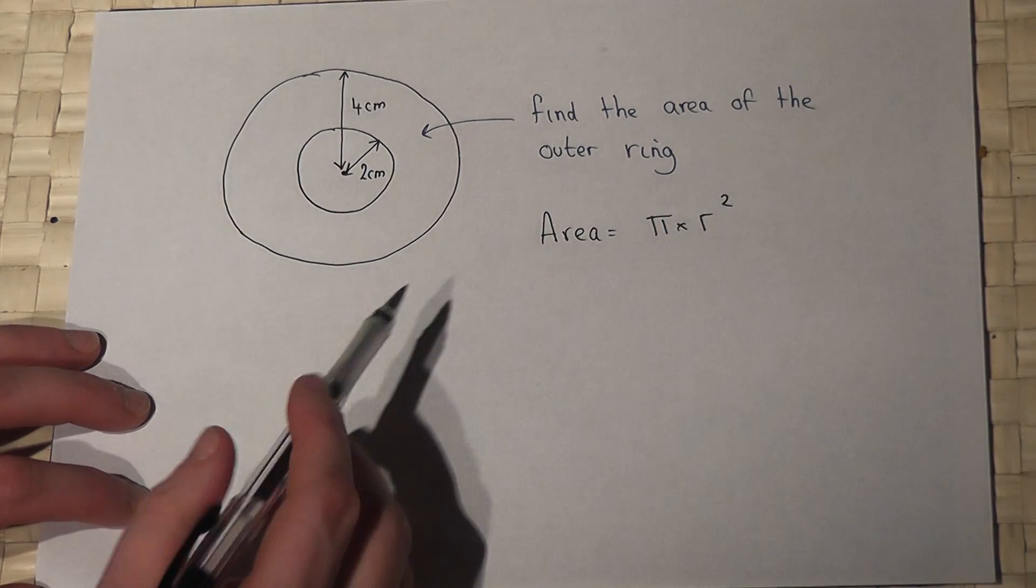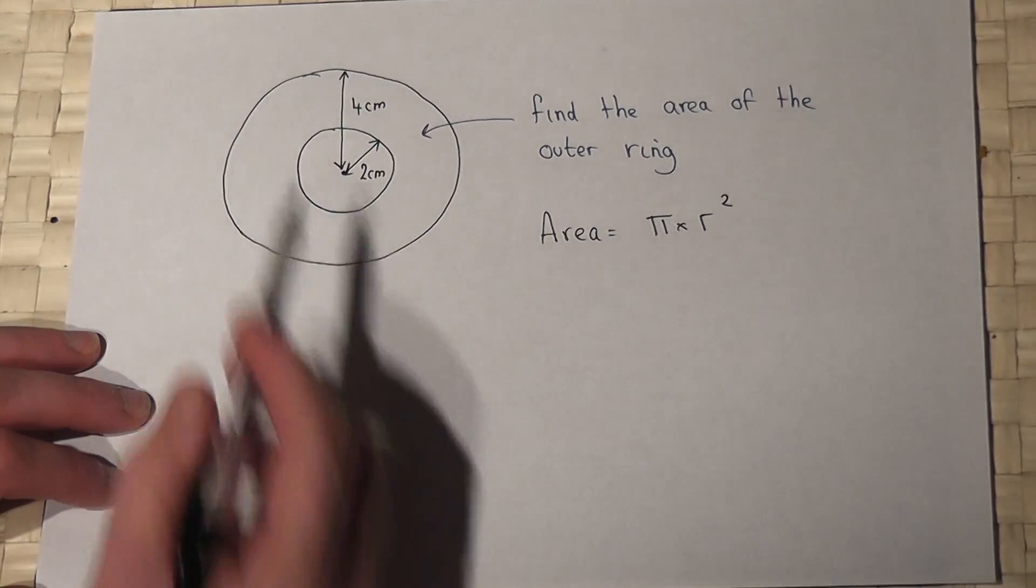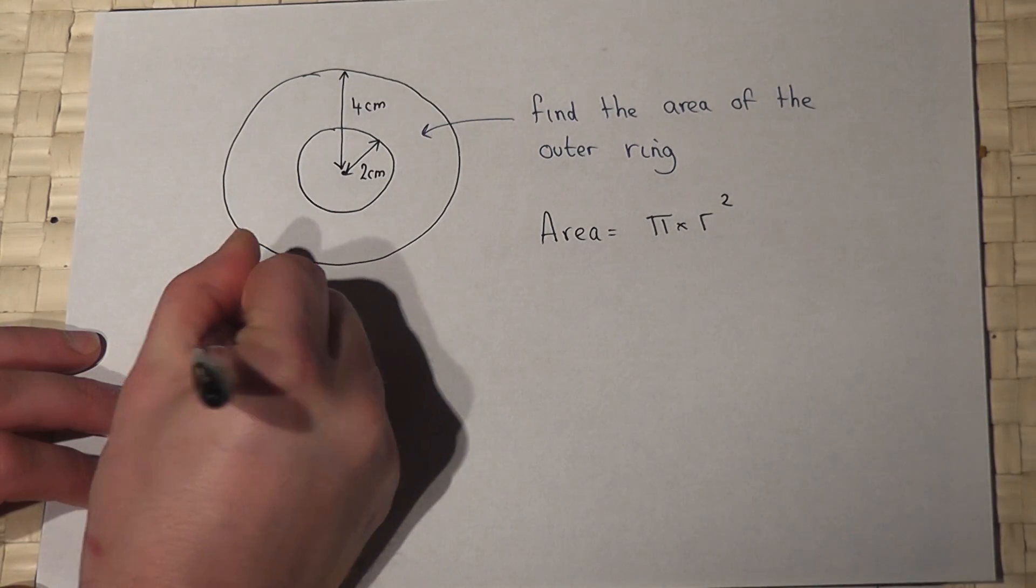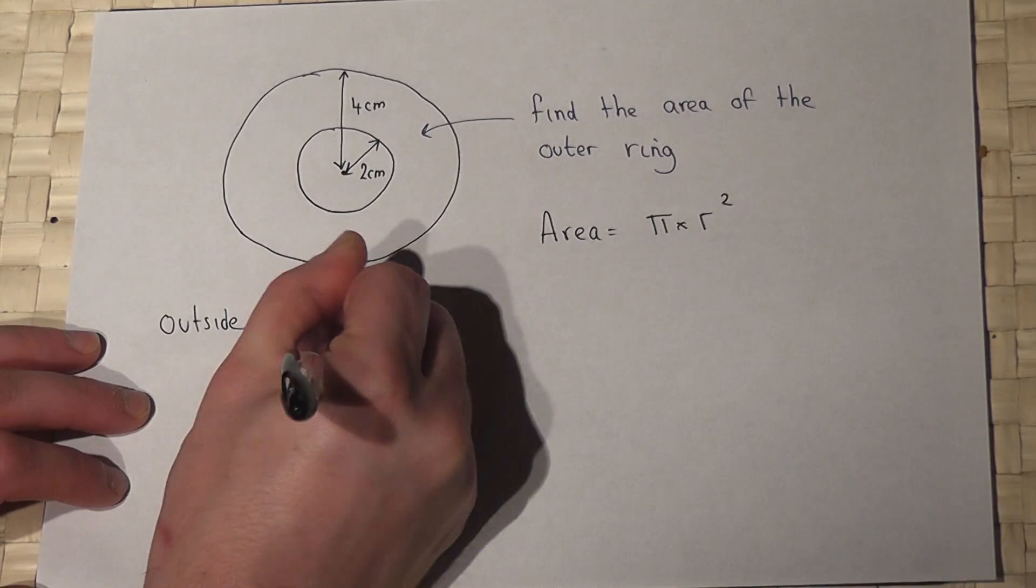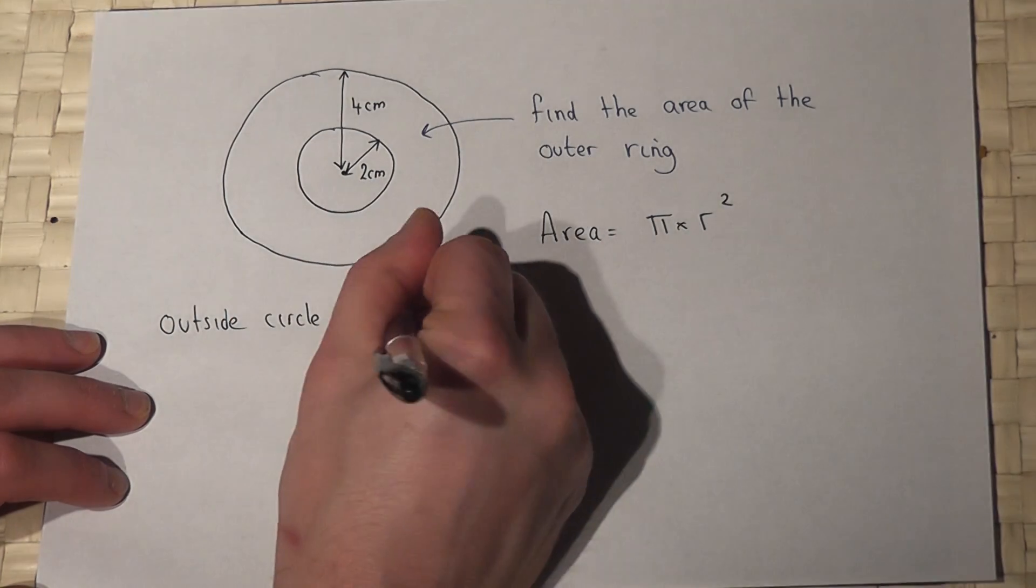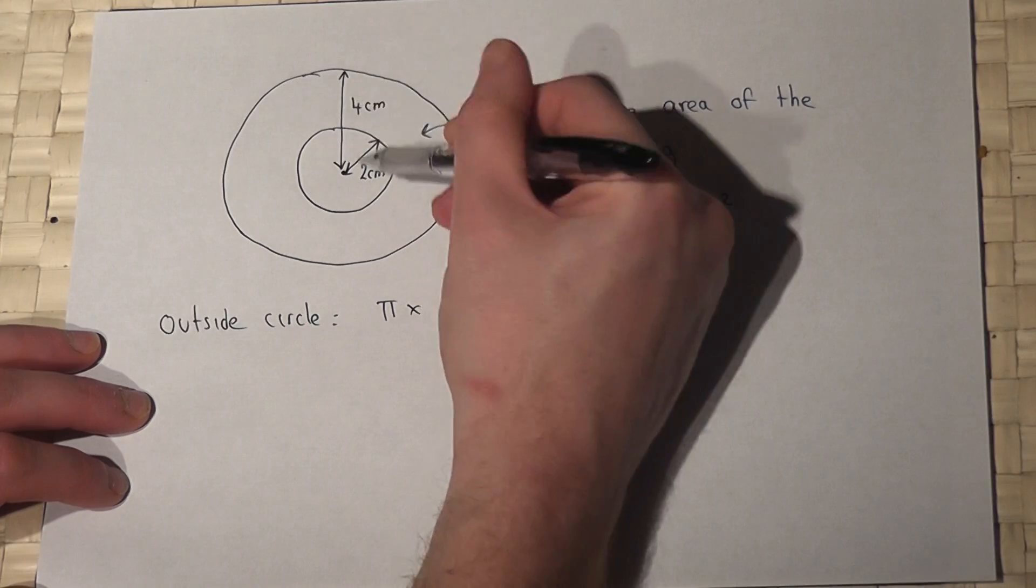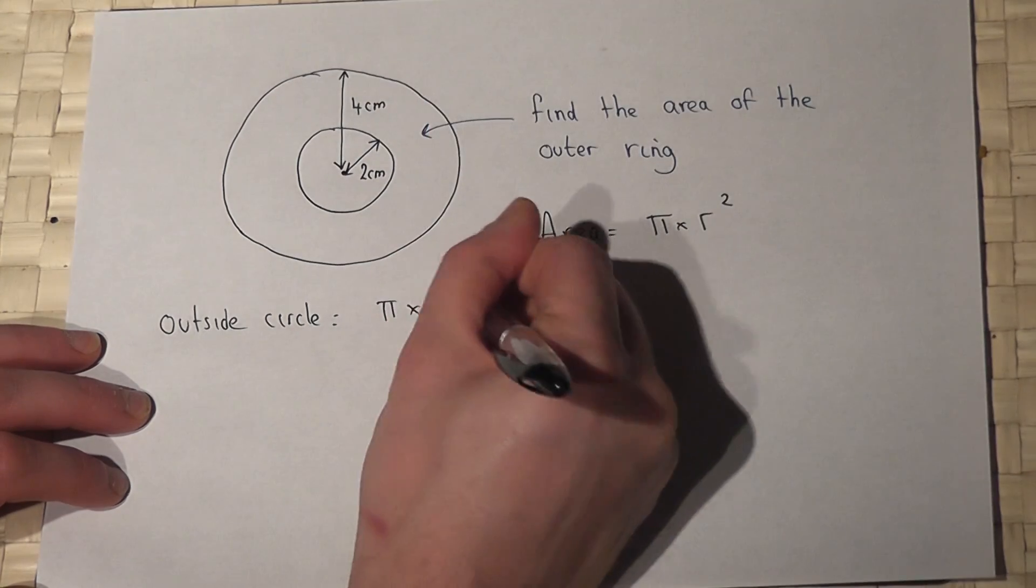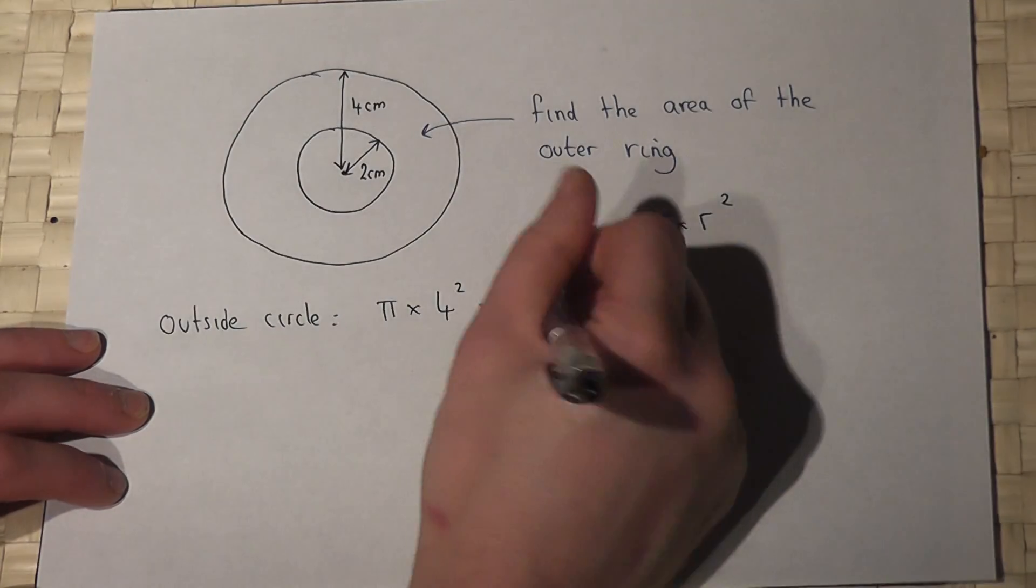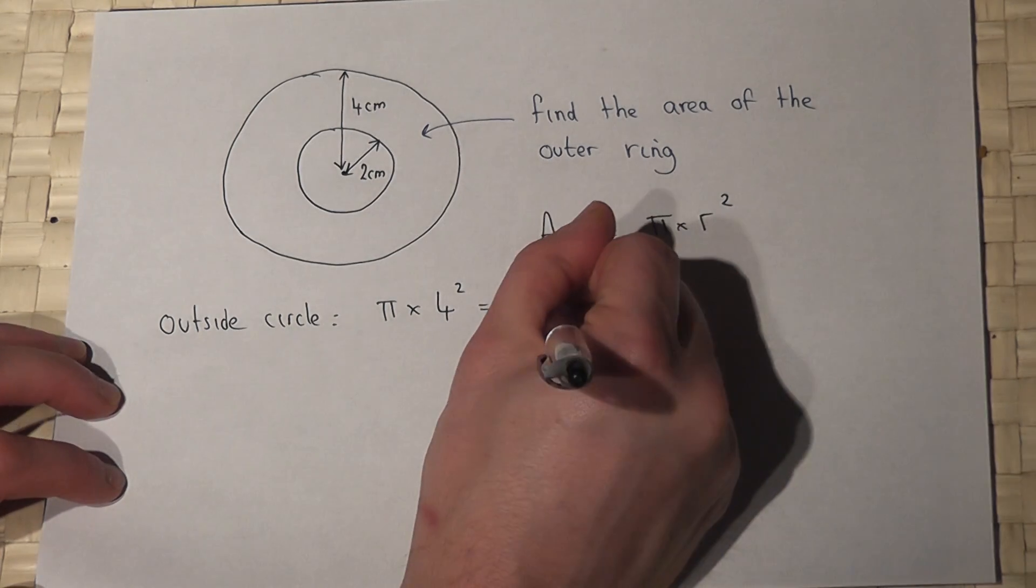So if I look at the outside circle, then its area will equal pi times its radius squared, so pi times four squared, which is 16. Four squared is 16 pi.